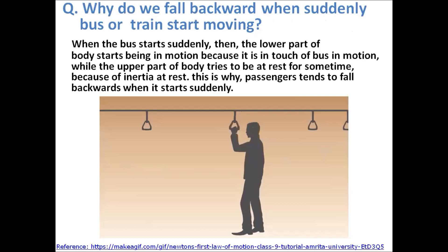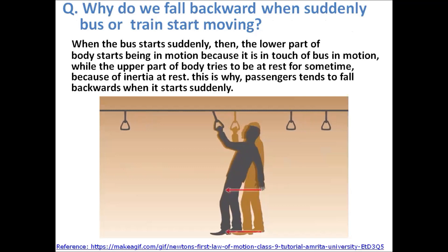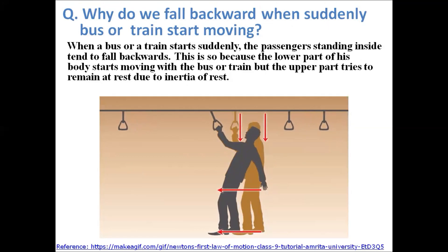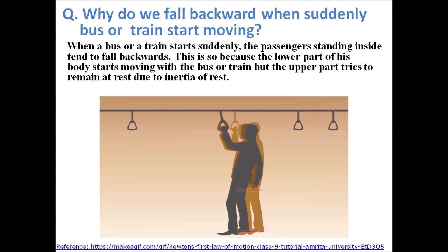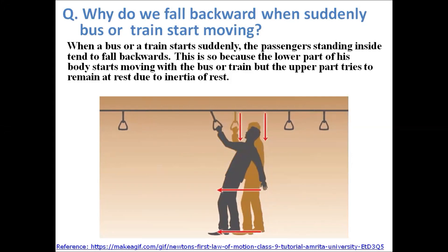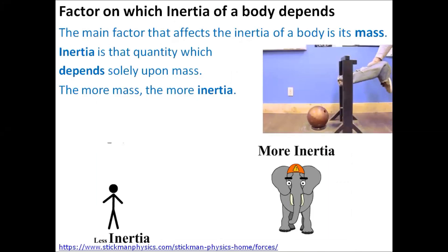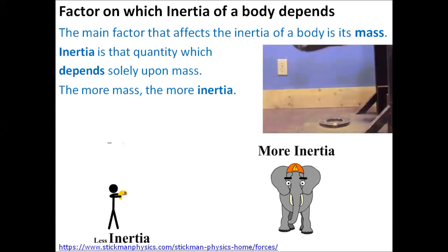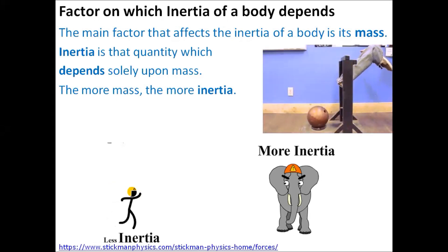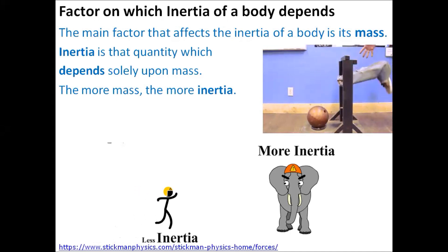There is a common question which comes in exams: Why do we fall backward when a bus or train suddenly starts moving? When a bus or train starts suddenly, the passengers standing inside tend to fall backward. This is because the lower part of the body starts moving with the bus or train, but the upper part tries to remain at rest due to inertia of rest. The main factor that affects the inertia of a body is its mass. Inertia is that quantity which depends solely upon mass — the more the mass, the more the inertia.